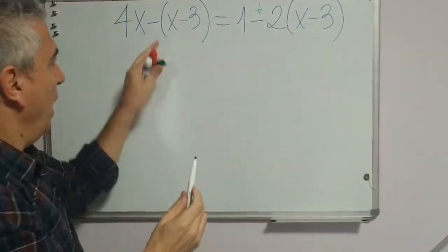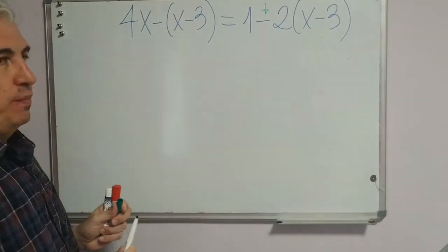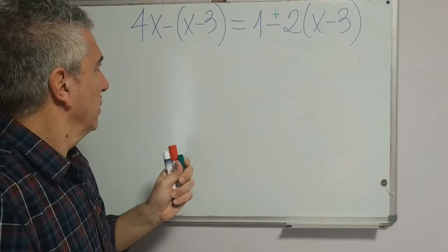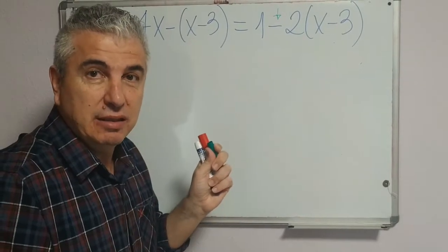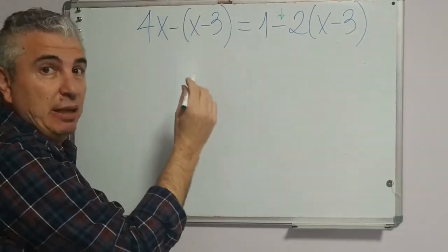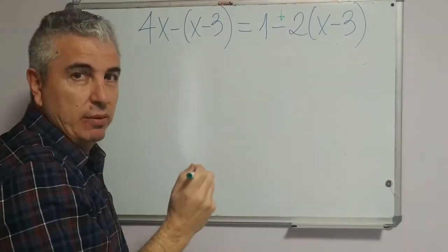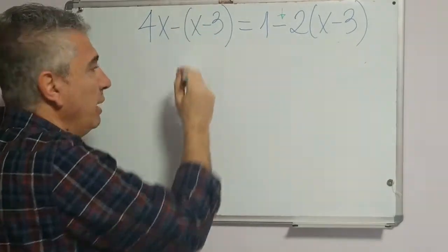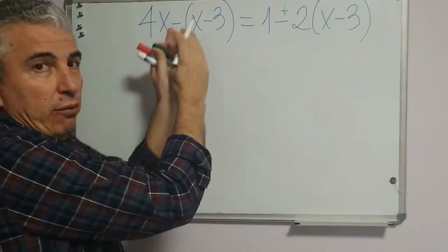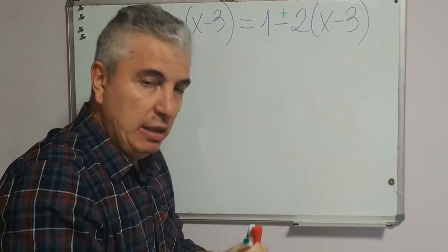What happens here with the other bracket? We don't have a visible coefficient, but yes, there is one — it doesn't appear, you cannot see it, but there is a number 1 here. So you multiply: negative 1 times x gives negative x, and negative 1 times negative 3.